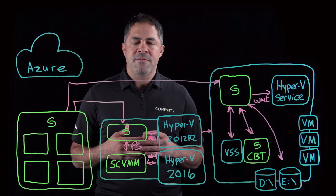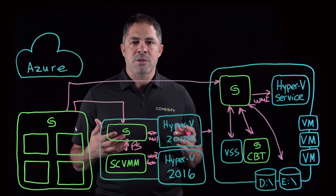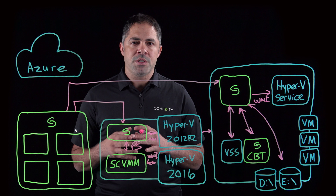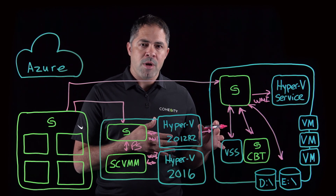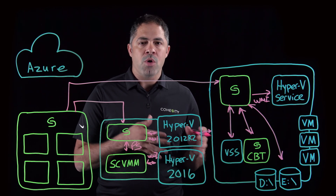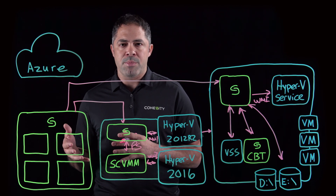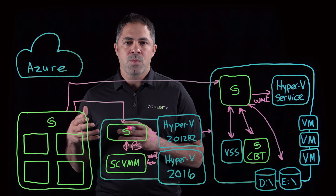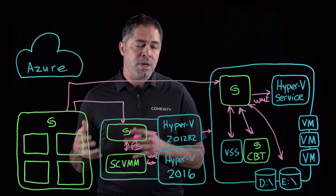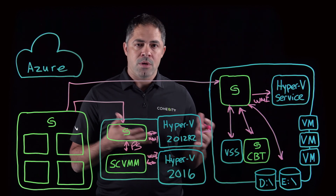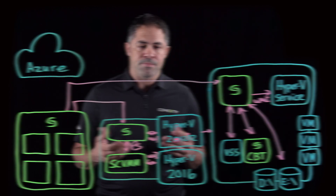Once the snapshots have been identified, the data is transferred through Cohesity's secure layer from the primary storage system onto Cohesity's data platform, where the files are maintained in fully hydrated form on our platform.